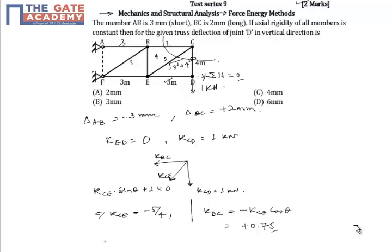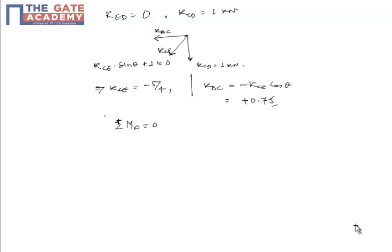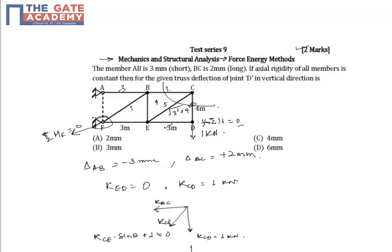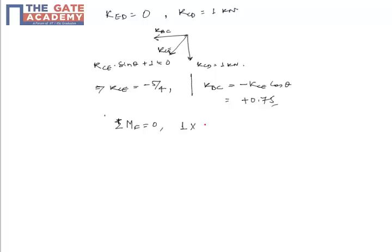Also, summation of forces about this point, summation MF would be 0. Taking moment about this point, this 1 into 6 equals Ra into 4. That is, Ra equals plus 1.5, which would be equal to KAB. This Ra would be stiffness of AB.